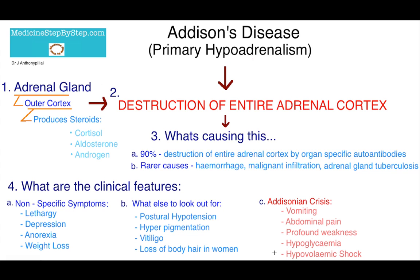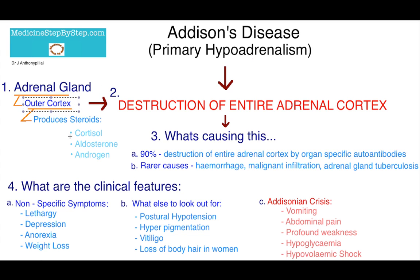Hello everyone, today I'm going to talk about Addison's disease, also known as primary hypoadrenalism. To understand Addison's disease, I should first talk about the adrenal gland. It comprises of an outer cortex, and it is at the outer cortex where steroids are produced — cortisol, aldosterone, and androgen.